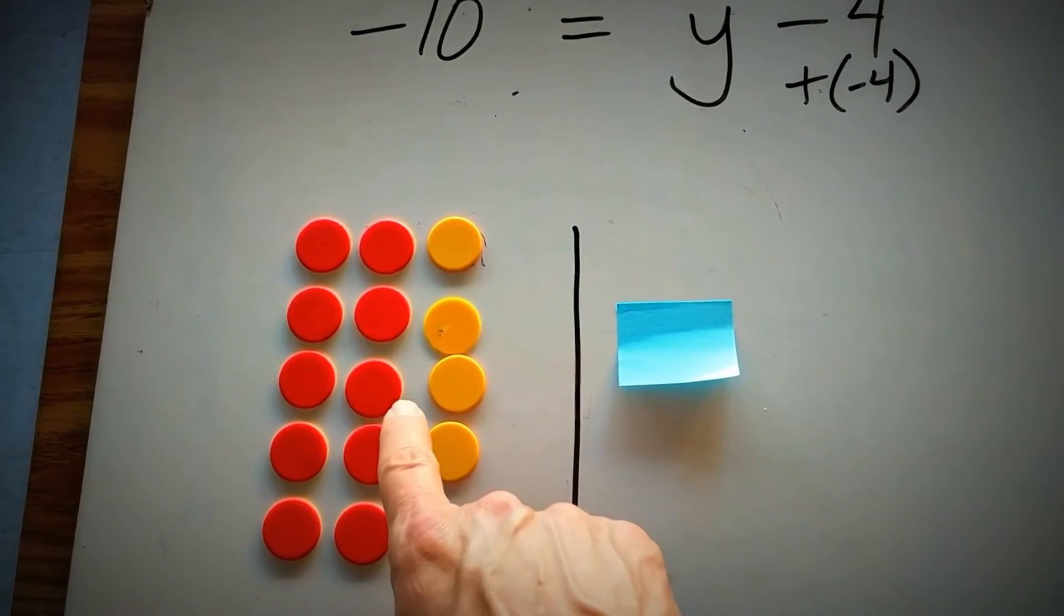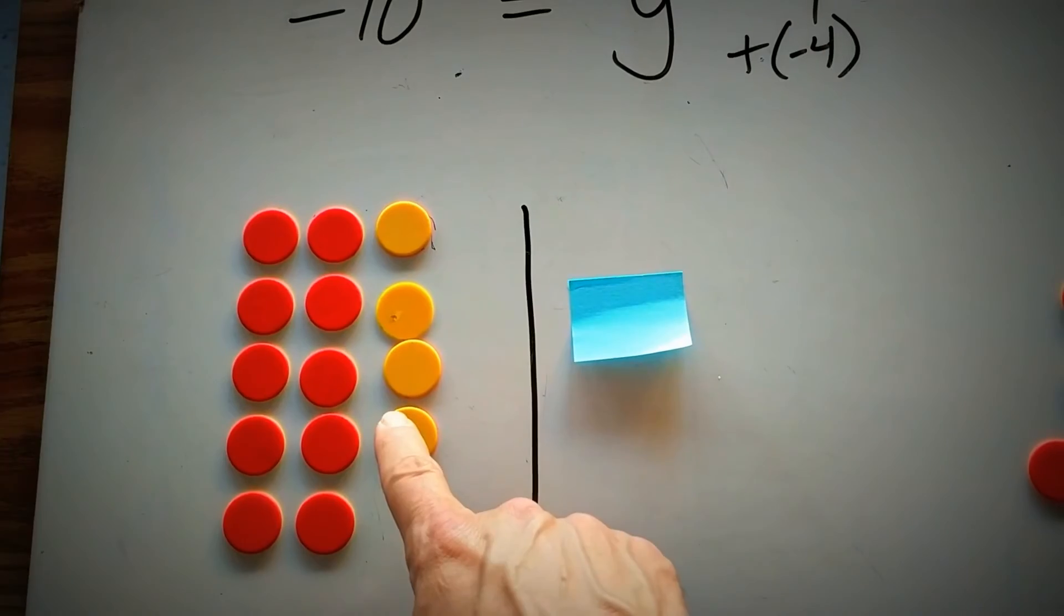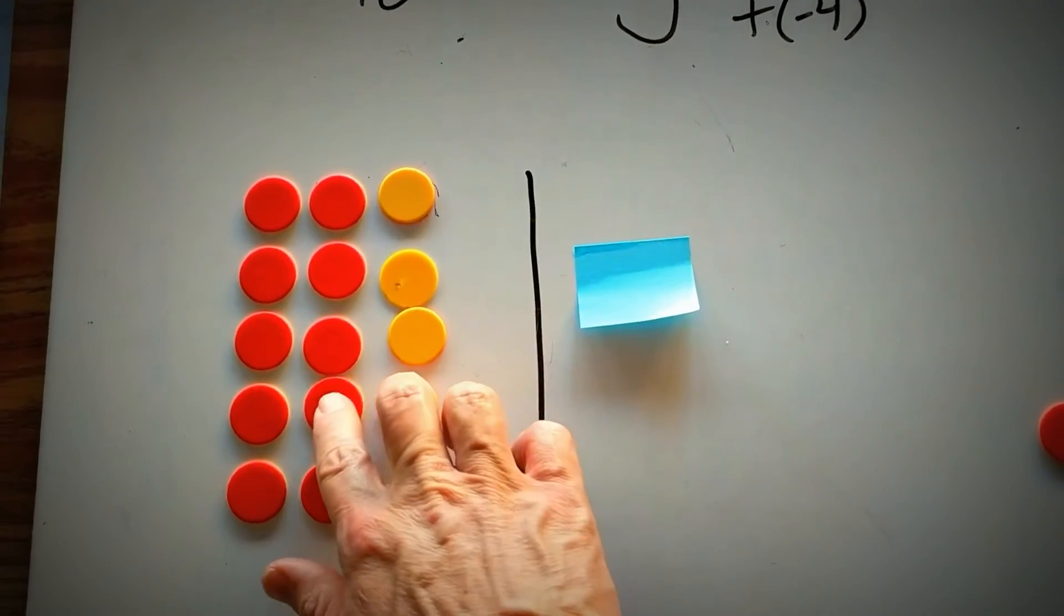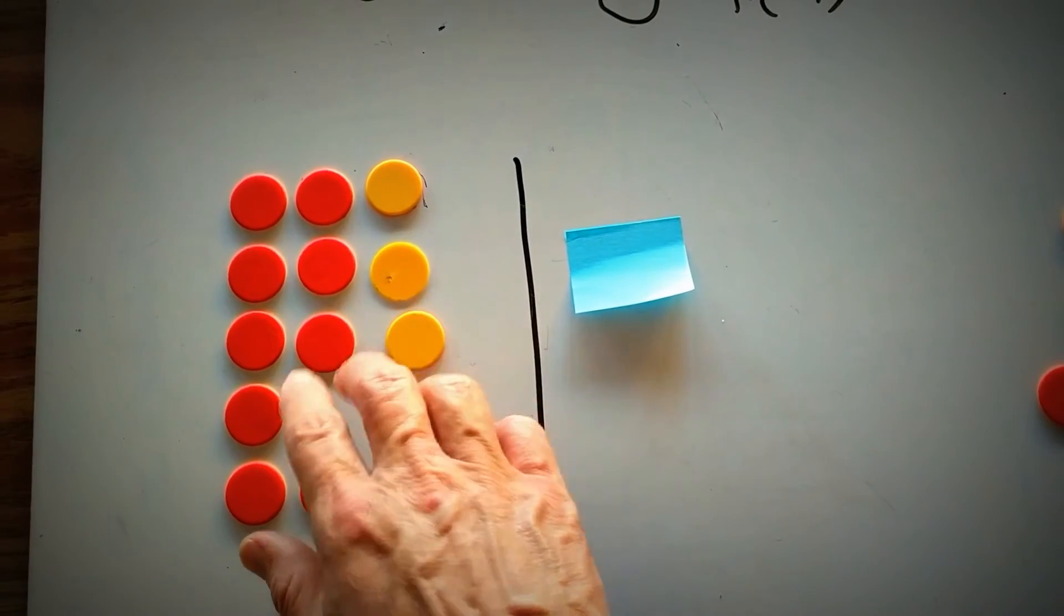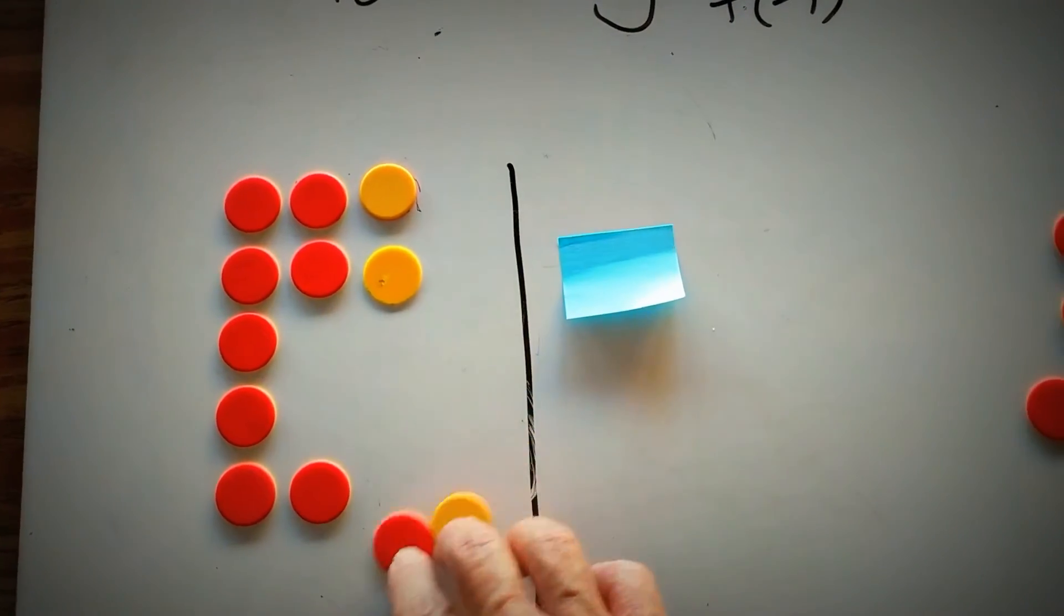But unlike last time, this time I actually have some zero pairs here as well. So I'm going to go ahead and take the zero pairs off the board. For every one set of, or one yellow, I'll take off one red.